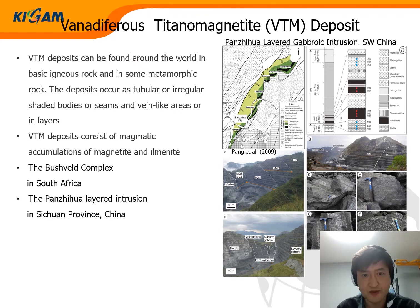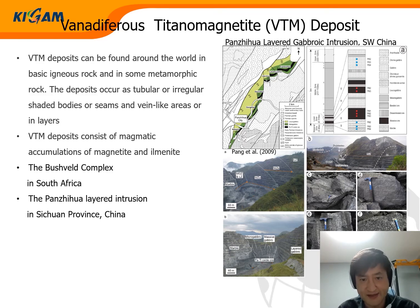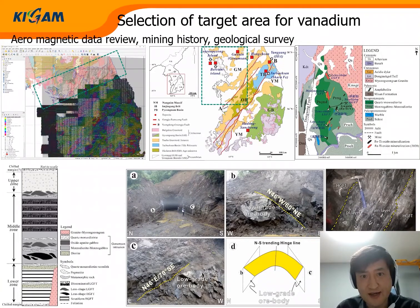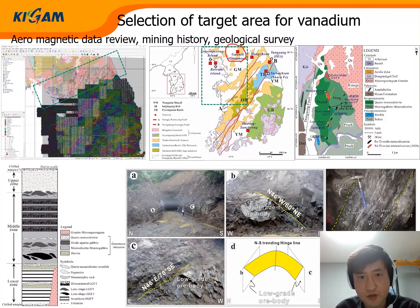VTM deposits can be found around the world in basic igneous rock and in some metamorphic rock. The deposits occur as tabular or irregular-shaped bodies or seams and are vein-like or in layers. VTM deposits consist of magmatic accumulations of magnetite and ilmenite. Typical deposits include the Bushveld Complex and the Panzhihua layered intrusion. We identified VTM deposit target areas based on aeromagnetic data and mining histories, finding magnetite mines of orthomagmatic deposit type.